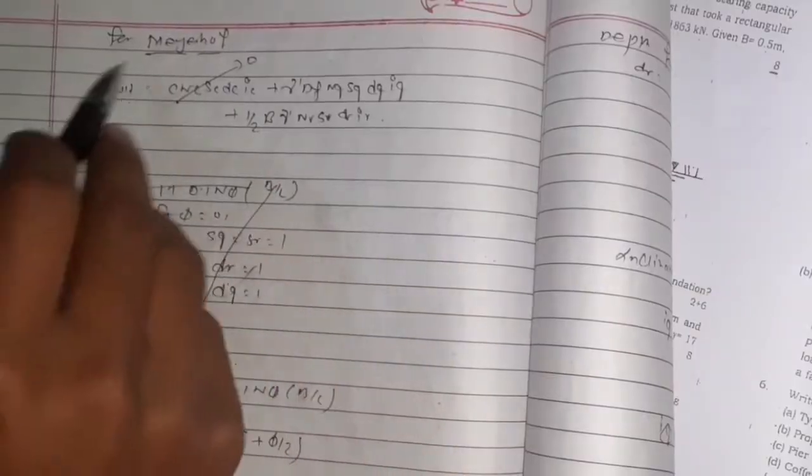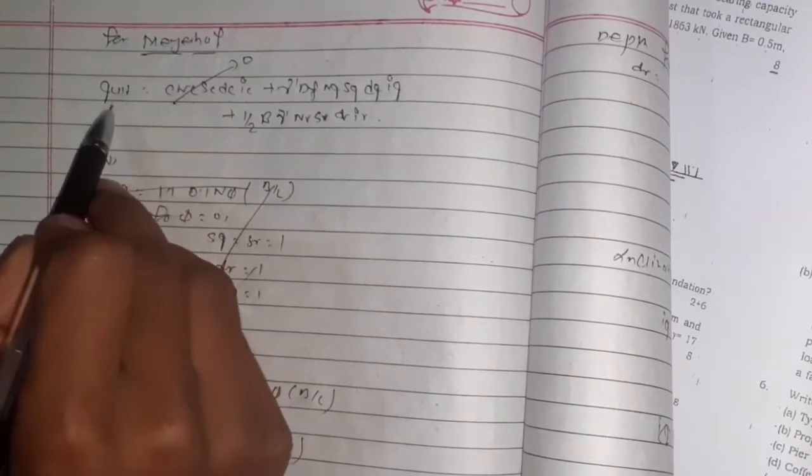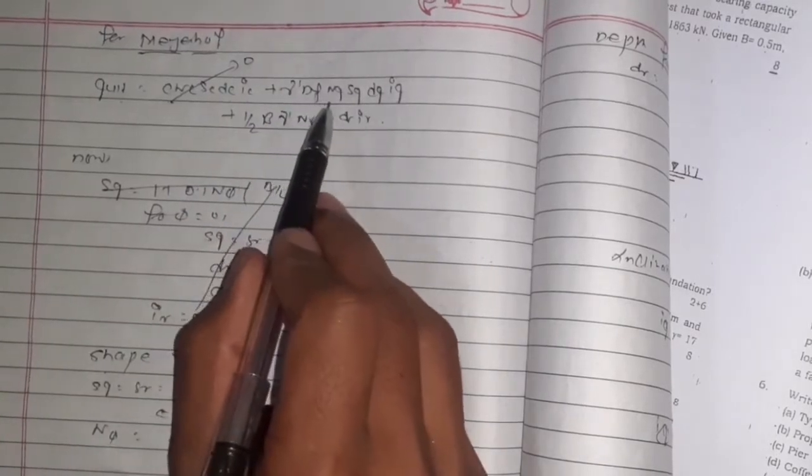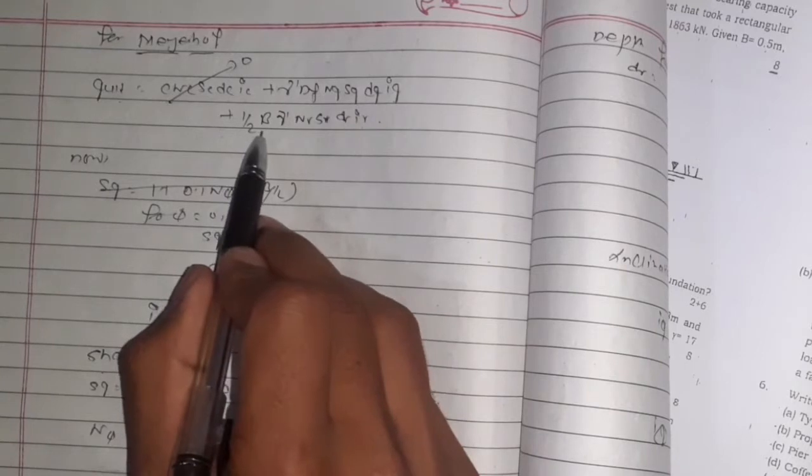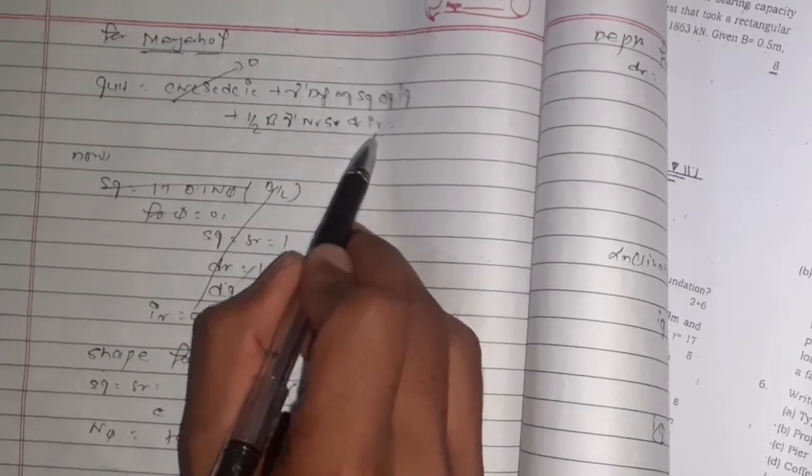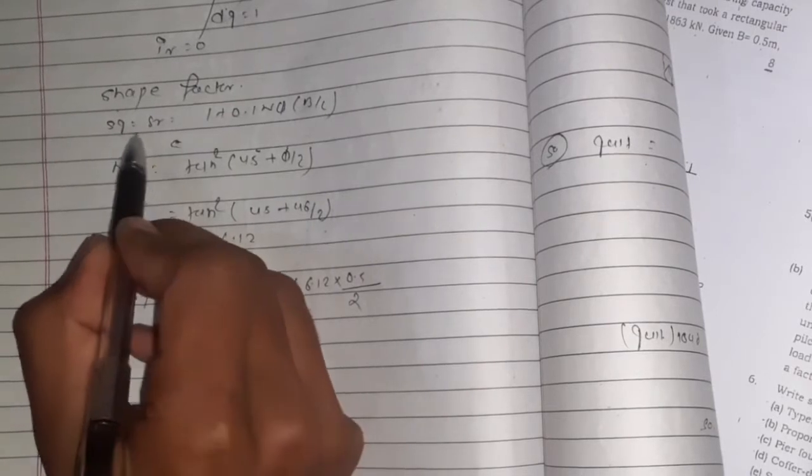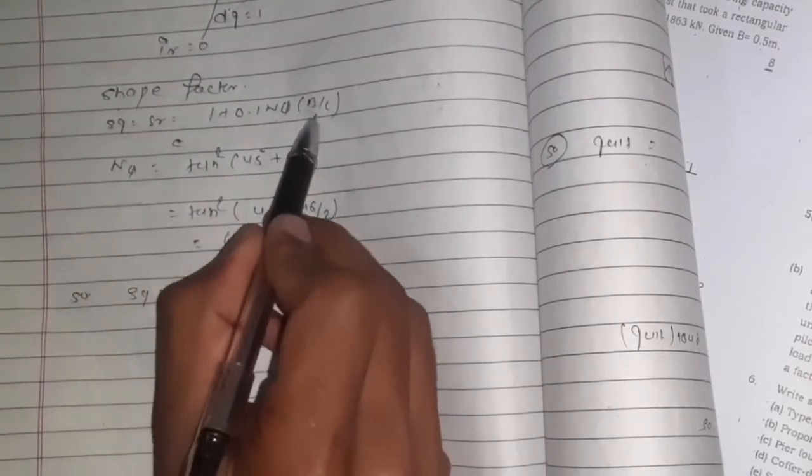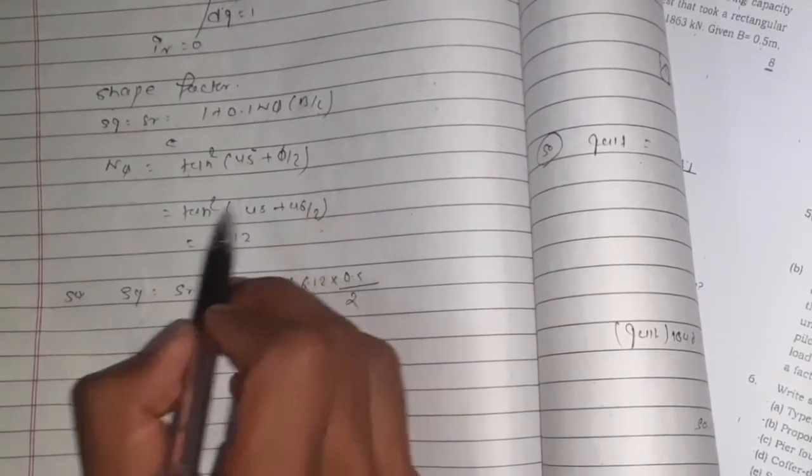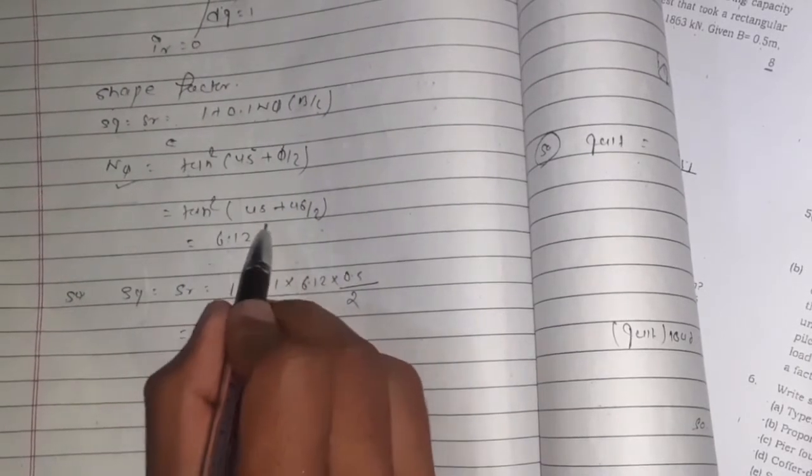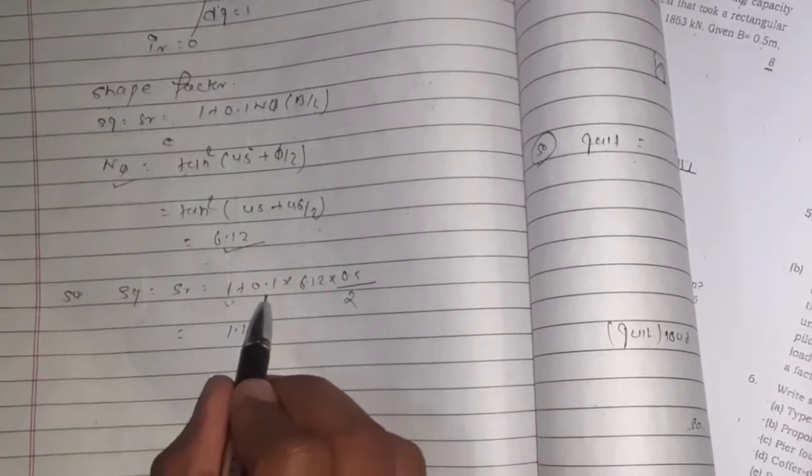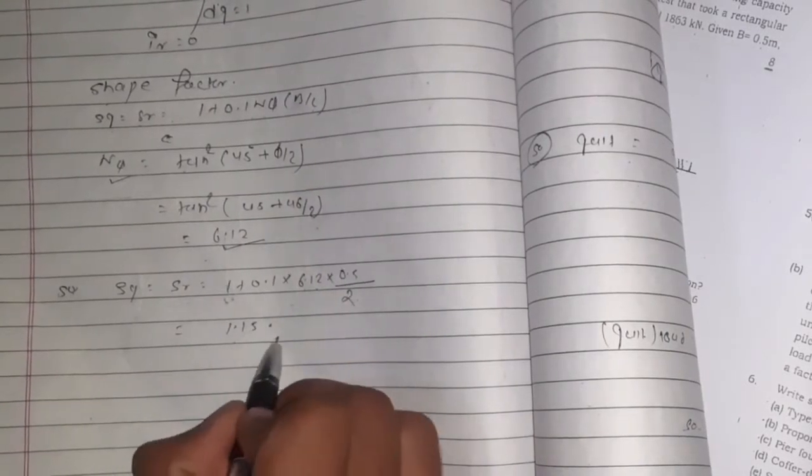For the solution, first we'll solve using Meyerhof. q ultimate = c·Nc·sc·dc·ic + γ'·df·Nq·sq·dq·iq + 1/2·B·γ'·Nγ·sγ·dγ·iγ. First calculate shape factors: sq = sγ = 1 + 0.1·Nφ·B/L. Nφ = tan²(45 + φ/2), so Nφ = tan²(45 + 46/2) = 6.12. sq = sγ = 1 + 0.1·6.12·0.5/2 = 1.15.